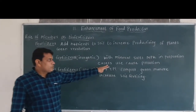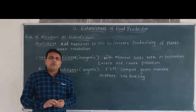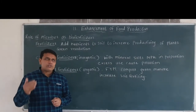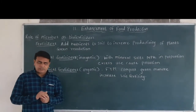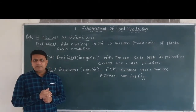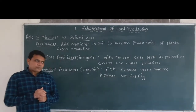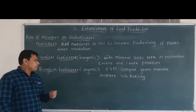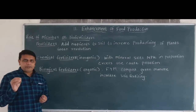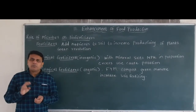Excess use of chemical fertilizers causes pollution of soil, water, as well as air. Similarly, continuous use of chemical fertilizers increases the acidic nature of the soil, thus decreasing the fertility of the soil. By using biological fertilizers, we can avoid soil pollution, water pollution, as well as air pollution.